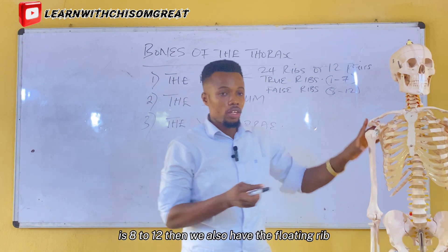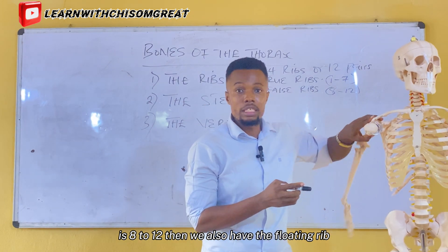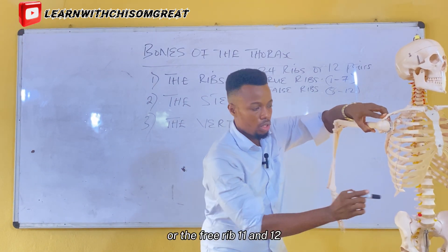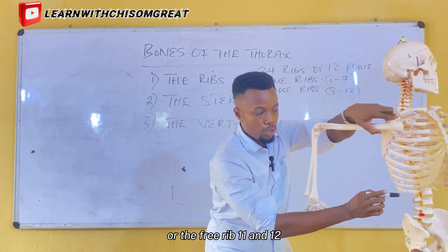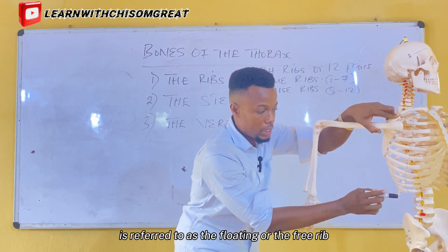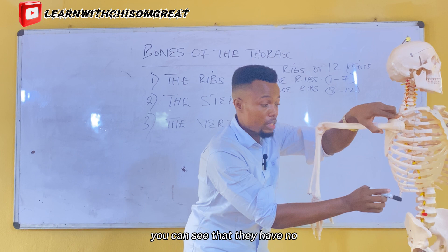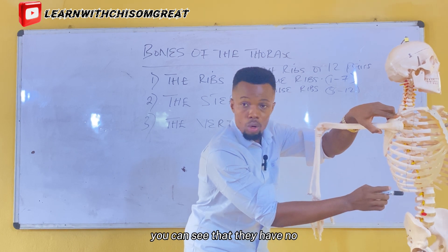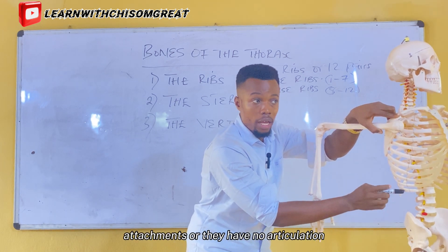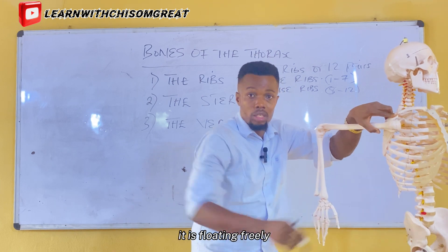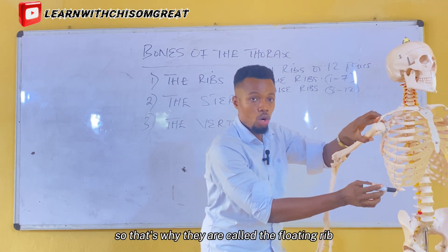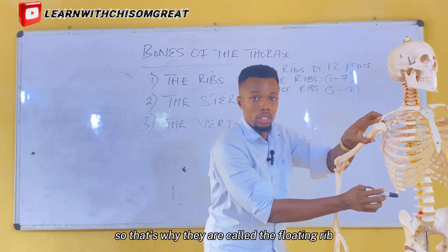We also have the floating rib, or the free rib. The 11th and 12th ribs are referred to as the floating rib. You can see that they have no attachment or articulation — they are floating freely — and that's why they are called the floating rib.